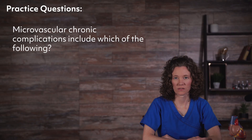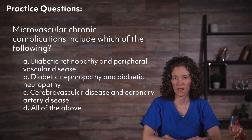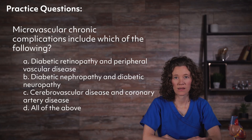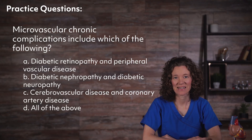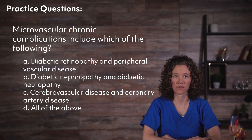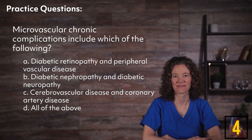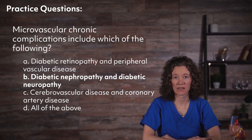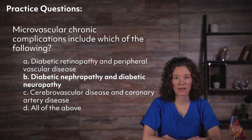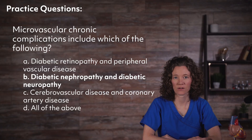Here's another review question: Microvascular chronic complications include which of the following? A) diabetic retinopathy and peripheral vascular disease, B) diabetic nephropathy and diabetic neuropathy, C) cerebrovascular disease and coronary artery disease, or D) all of the above? If you chose B, diabetic nephropathy and diabetic neuropathy, you're correct. Microvascular complications affect the smaller blood vessels, leading to neuropathy, nephropathy, and retinopathy.